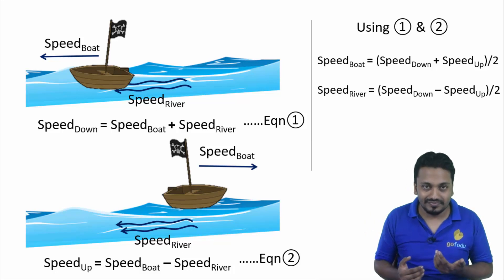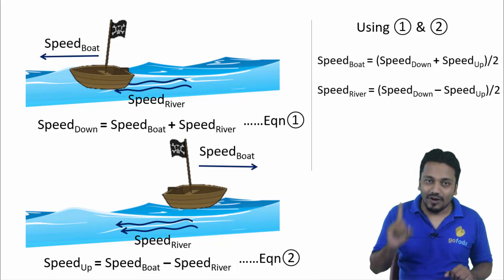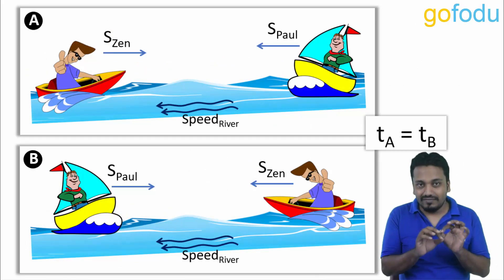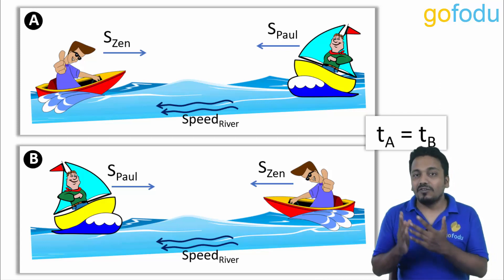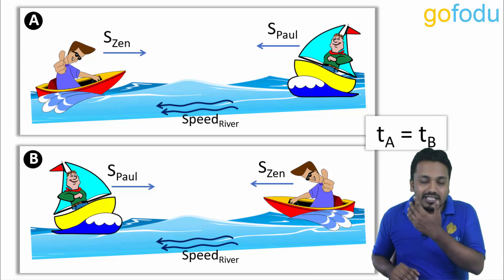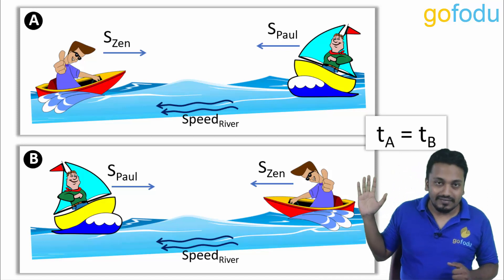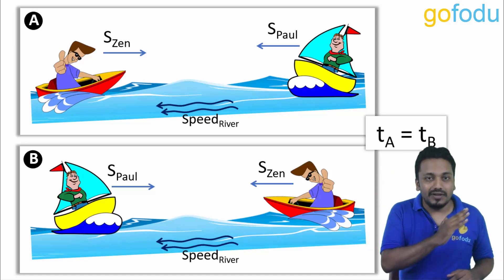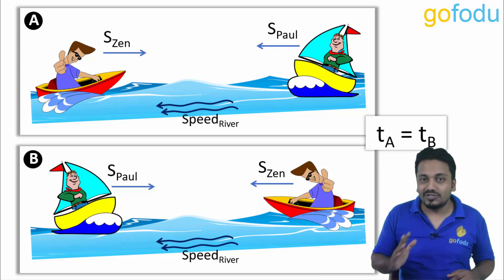In still water speed of Zen's board is szen and speed of Paul's board is spaul. In case one Zen is going upstream and Paul is going downstream. In case two Paul is going upstream and Zen is going downstream, and distance between them in both cases is same.